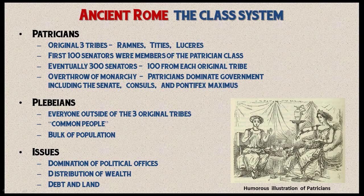Eventually, as the plebeians gained political clout, wealth would be distributed more evenly. The final issues were debt and land. Many plebeians over several centuries owed large debts to the patricians, and with their domination of government, the patricians were able to distribute lands amongst themselves — but we will see that change in the coming centuries.